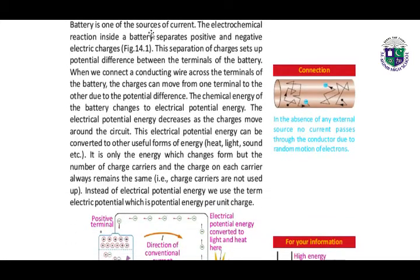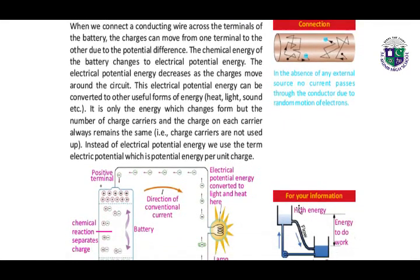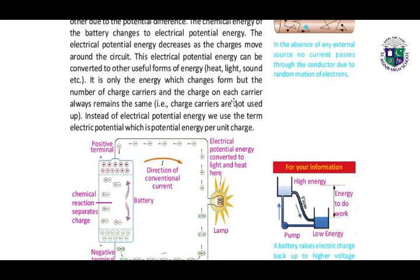Battery is one of the sources of current. The electrochemical reaction inside the battery separates positive and negative electric charges. This separation of charges sets up a potential difference between the terminals of the battery, as shown in the diagram. Chemical reaction separates the plus charges and the negative charges. When we connect a conducting wire across the terminals of the battery, the charges can move from one terminal to the other due to this potential difference. So the chemical energy of the battery changes to electrical potential energy. The electrical potential energy decreases as the charges move around the circuit.